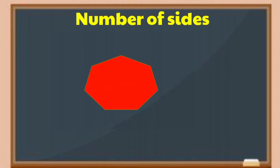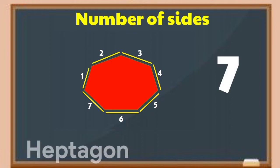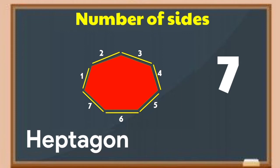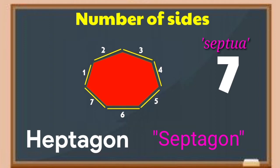Figure 5. Yes, it has 7 sides. The figure on screen is a heptagon, also called a septagon. From the word 'septua' meaning 7. A heptagon has 7 sides.